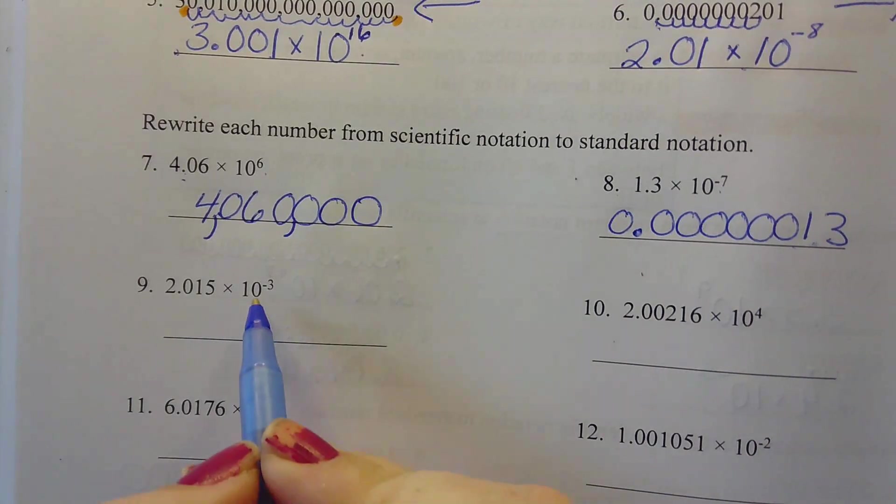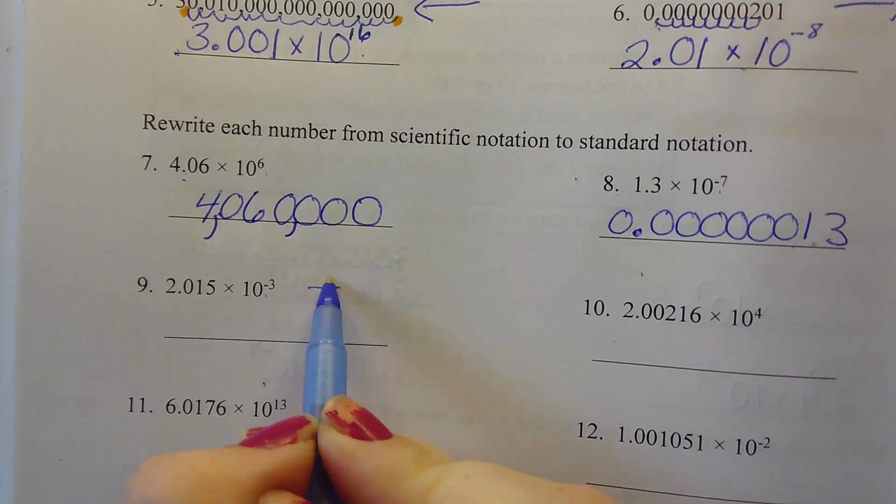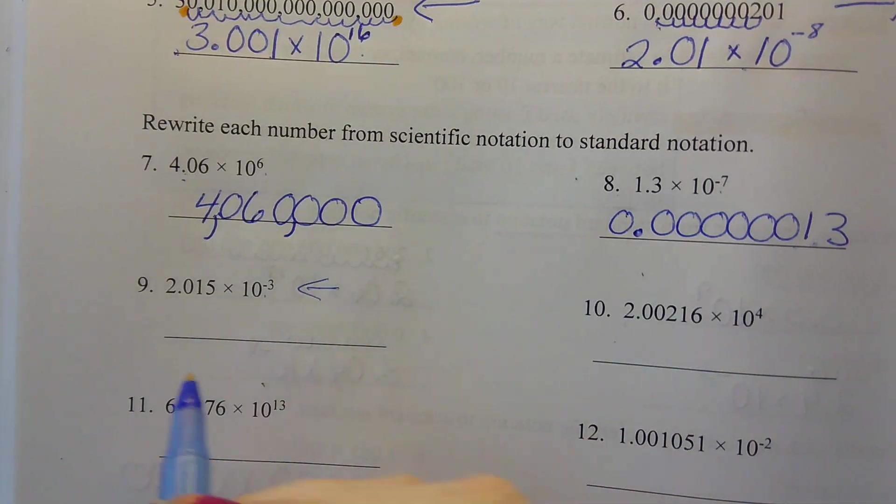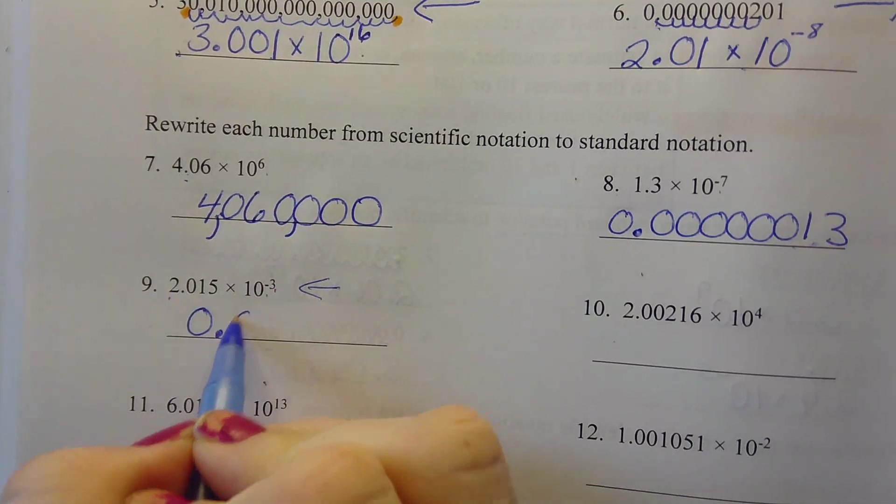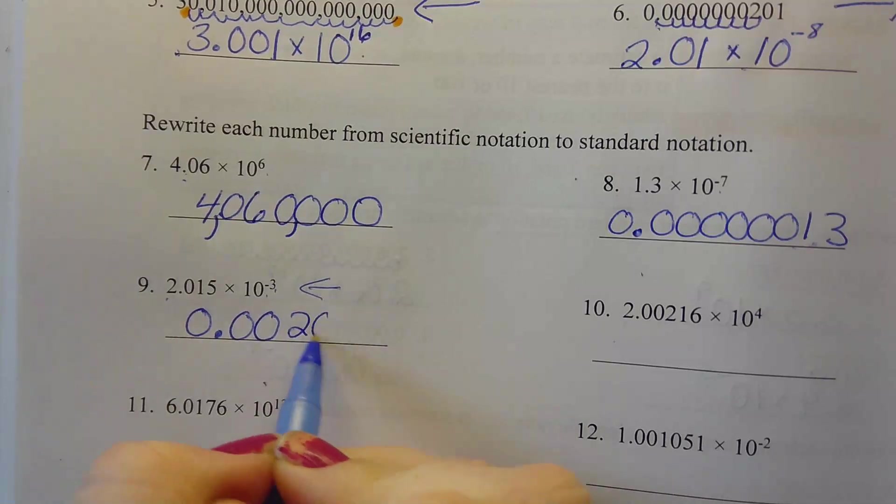Number 9, it's a negative number, so we are going to the left with our decimal. It's a negative 3, we already have a 2, so we need to add 2 more zeros before we can put our number in.